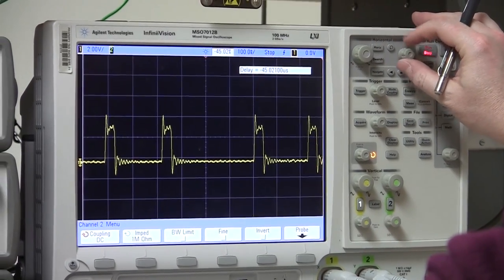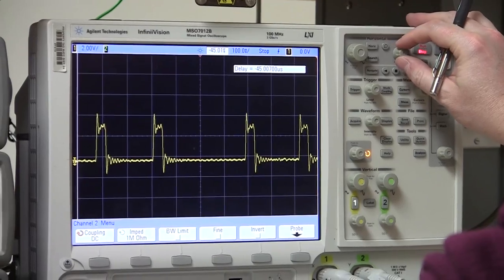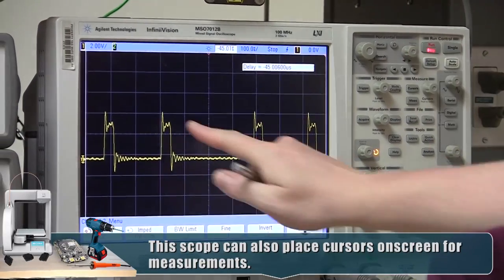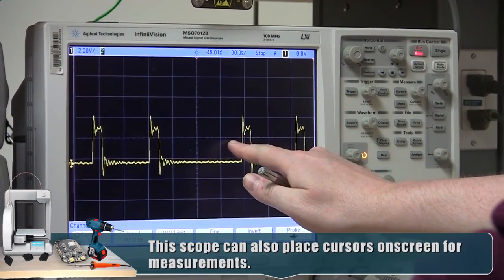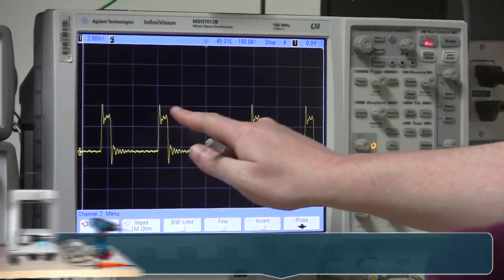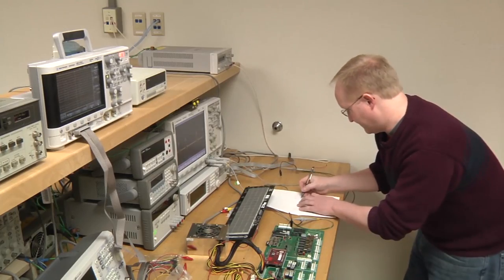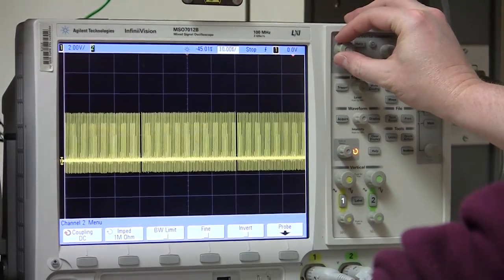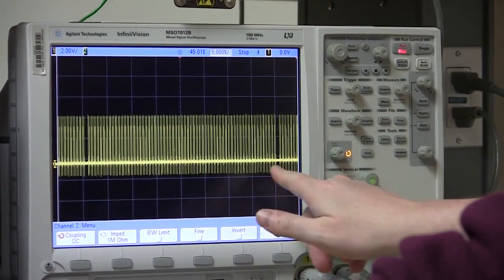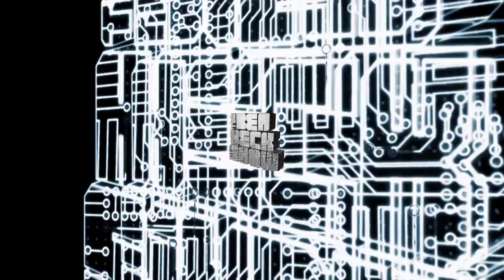You can engage auto-scale on your scope, and it'll tell you the frequency pretty easily as well. Okay, and that's 400 nanoseconds. All right. Yeah, you can clearly see the line separation there. Now it's time for a tech timeout.